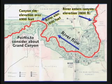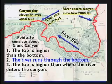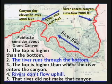The river enters the canyon 2,800 feet above sea level and flows south and then west. The canyon rim is over 6,900 feet, up to 8,500 feet in places. At one point the river is only 1,800 feet above sea level. So since the top is higher than where the river enters the canyon, and rivers don't flow uphill, then that river did not make that canyon. It's just common sense.